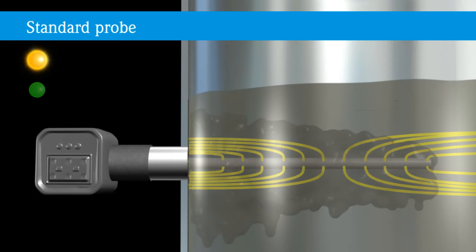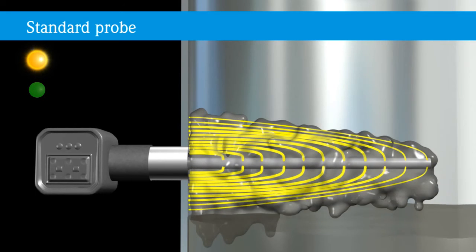If conductive build-up sticks to the probe, this is recognized as a change in capacity in relation to air, comparable to a product. In this case, the lines of flux run directly through the build-up to the tank wall. Even if the product does not cover the probe, it reports covering erroneously.